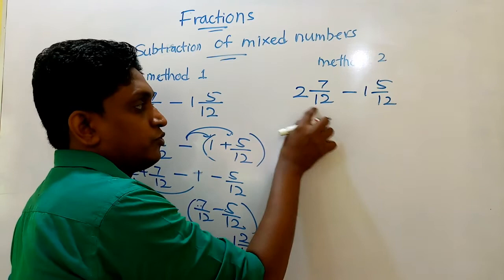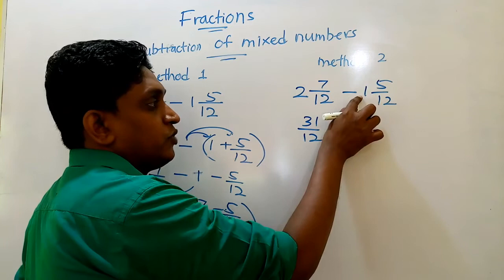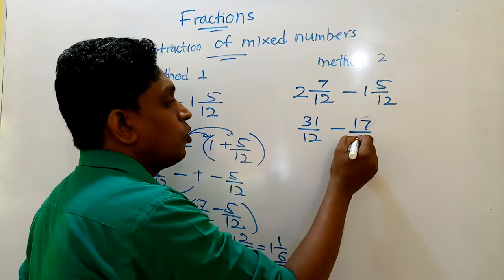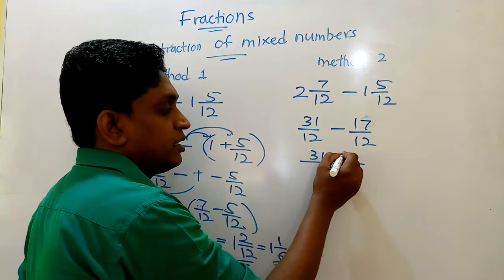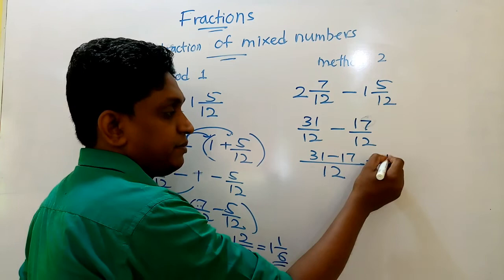You have to convert this to improper. 12 into 2, you know, 24. 24 and this 7 is 31 over 12. And this is 12 into 1, 12 and 5, 17 over 12. Now, denominators are equal, numerators can be subtracted. What is the answer, children? 31 minus 17 means 14.